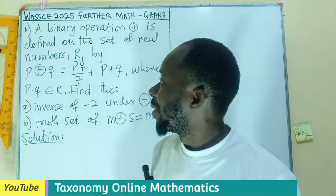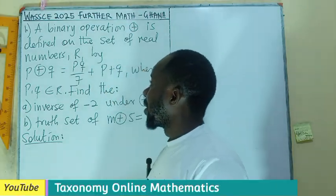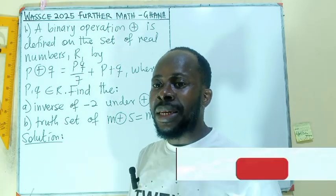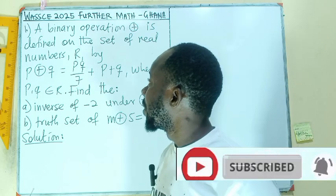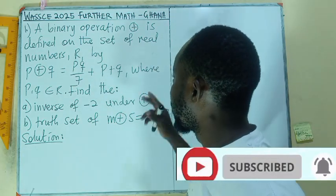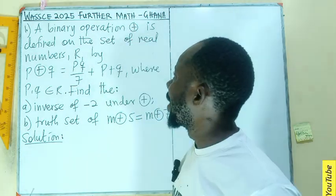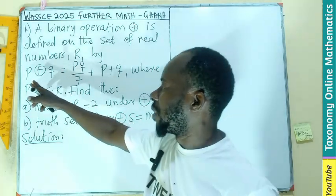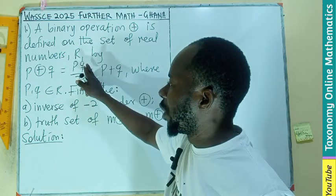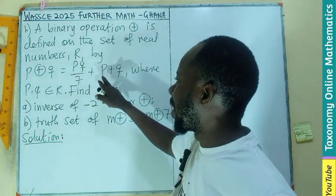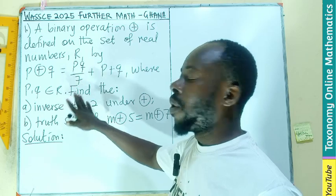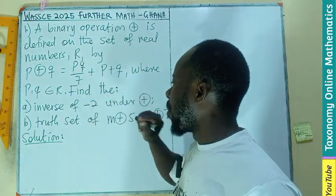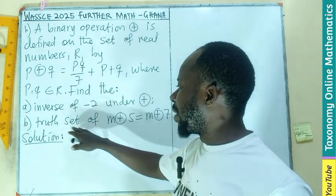Welcome to question number one of AYAWASI 2025, the Further Mathematics for the Ghanaian student, Section B. A binary operation ⊕ is defined on the set of real numbers by p ⊕ q = pq/7 + p + q, where p and q are elements of the real set. We have to find the inverse of negative 2 under that operation, and find the truth set of m ⊕ 5 = 7 ⊕ m.